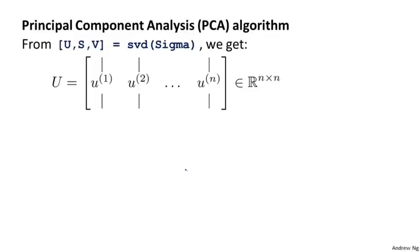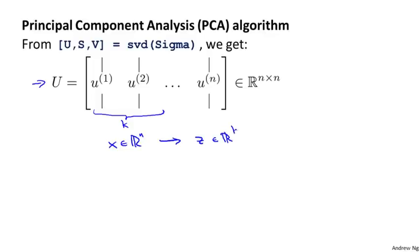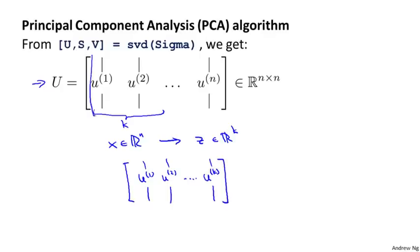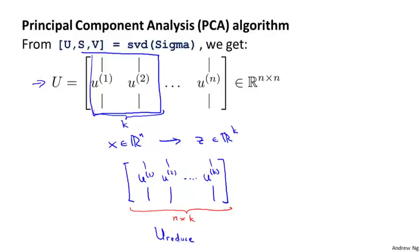To wrap up the description of the rest of the procedure: from the SVD routine we get matrices U, S, and V. We use the first k columns of the U matrix to get u1 through uk. Now we need a way to take my original data set x which is in Rn and find a lower dimensional representation z which is in Rk. I'm going to construct this matrix by stacking u1, u2, up to uk in columns — taking the first k columns of the U matrix — so this is going to be an n-by-k matrix. I'll call this matrix U_reduced.